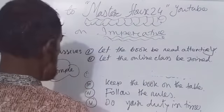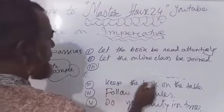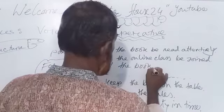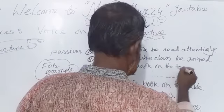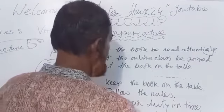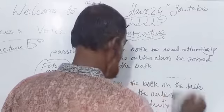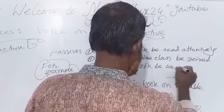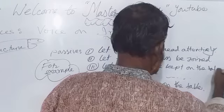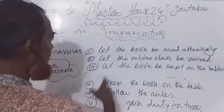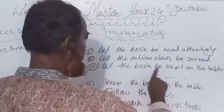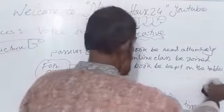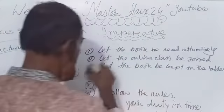Number three: 'Keep the book on the table.' The passive voice becomes: 'Let the book be kept on the table.' Very easy — 'Let the book be kept on the table.' Very simple. If you follow and continue my class, you will be happy.